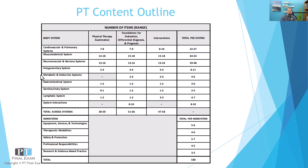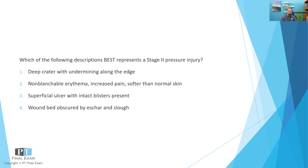So let's go ahead and talk about our practice question for today. The question is related to the integumentary system — somewhere between eight and 11 questions there. As per our usual, I will read you the question, give you a moment to respond, and then we'll talk about it together. Which of the following descriptions best represents a stage two pressure injury?